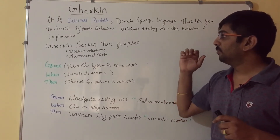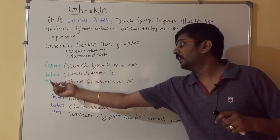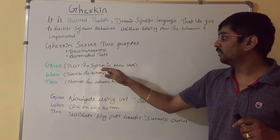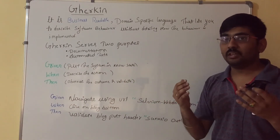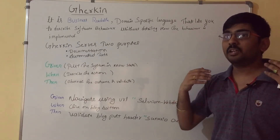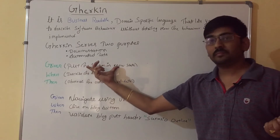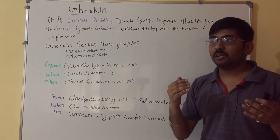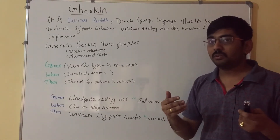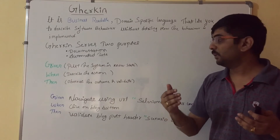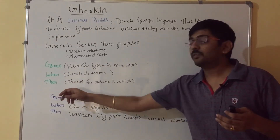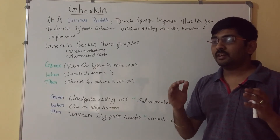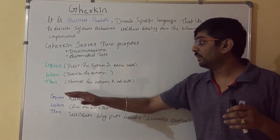How do we write acceptance criteria using the Given, When, Then keywords? Given is the prerequisite — it puts the system in a known state. All requirements needed to start testing are placed here. When describes the action — such as performing a click, entering values into fields, or selecting dropdown values. Then is the final result or validation — whether a text or image is present, or validating records. All final validations go under Then.